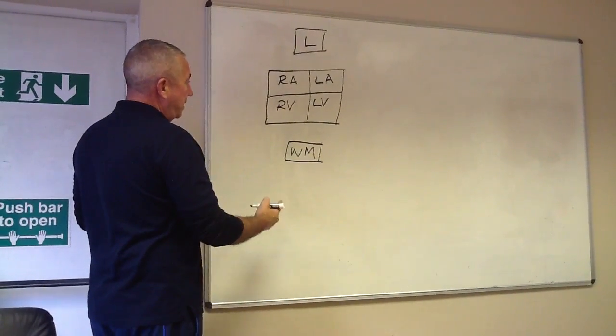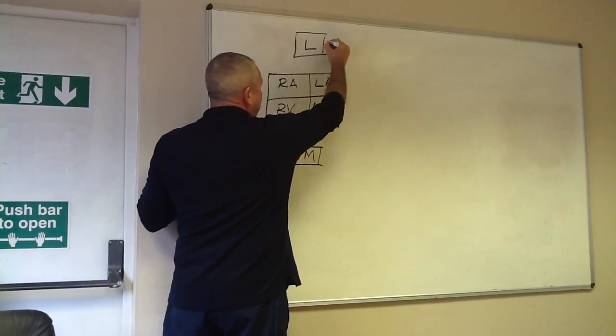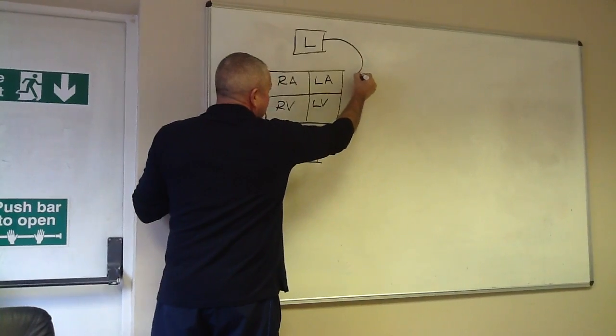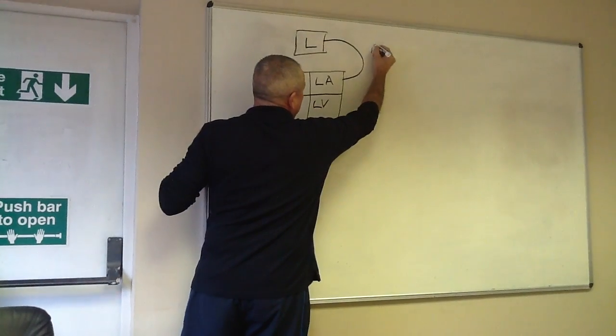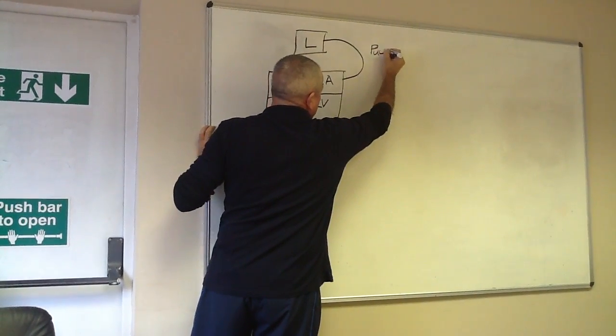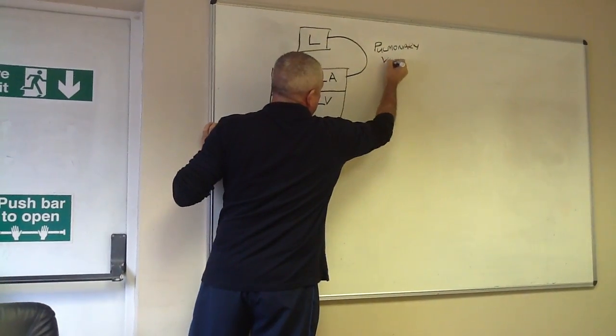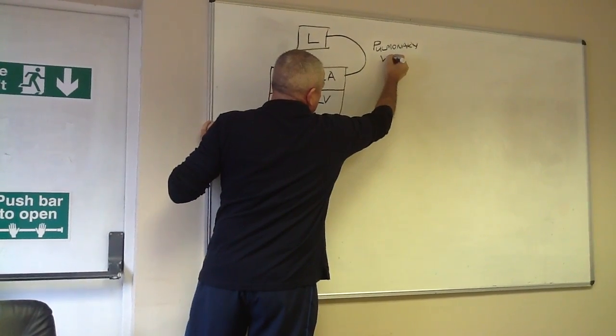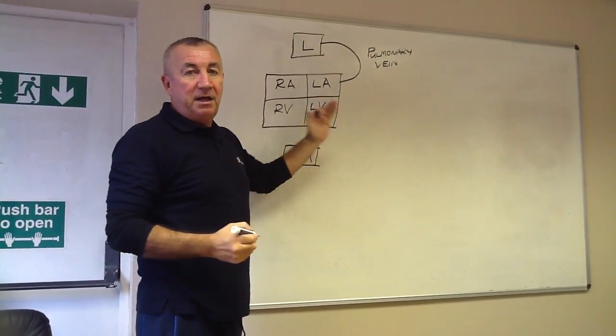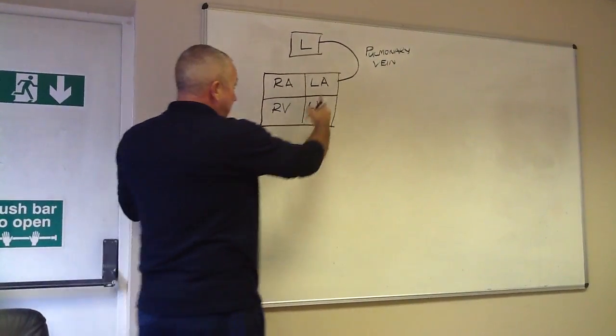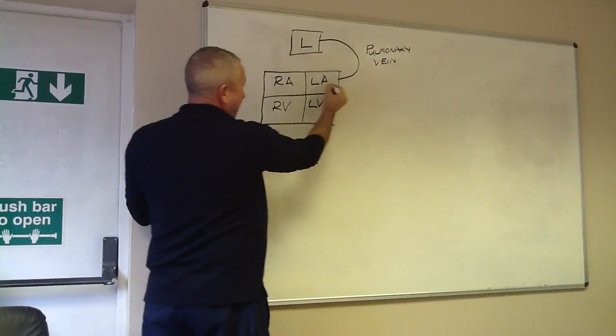We are then going to show you the main routes around the heart in terms of the way the blood flows. So from the lungs into the left atrium, the blood flows via the pulmonary vein. Remember, veins bring blood into the heart and arteries take it away from the heart.